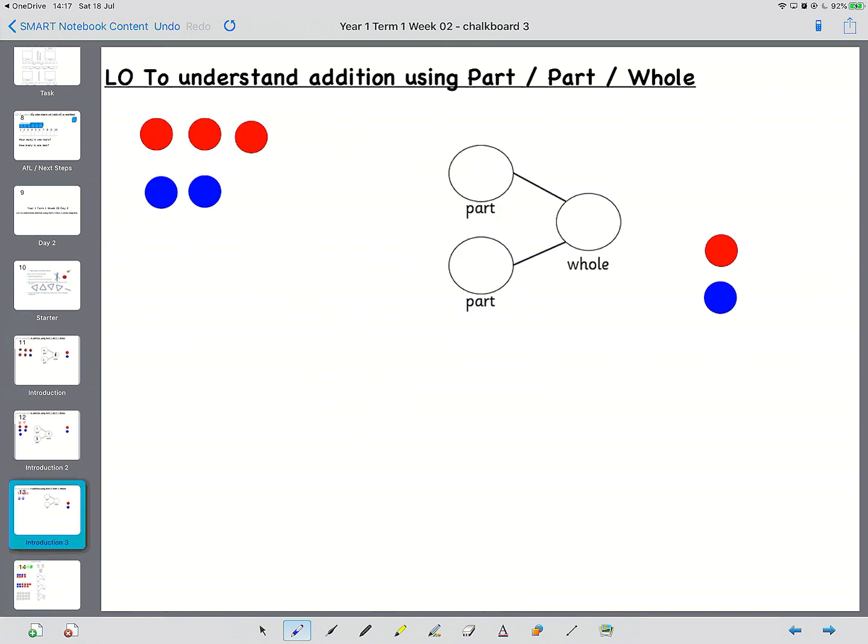Okay, here's another challenge. This time we've got the counters but no part of the part part whole is full. How many red counters are there? That's right, there's three. So where do you think we write that? Brilliant, we write it in the first one of the part.